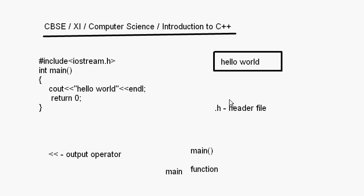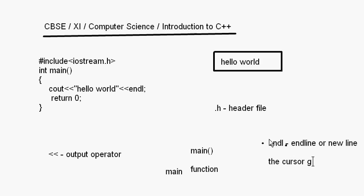After the string, endl is added using the output operator. endl stands for end line, which means go to the next line. So wherever you have this endl statement, it means end line or new line — the cursor goes to the next line after printing. We will look at other variations of cout in coming videos; this is just a simple cout statement where I have put a string.